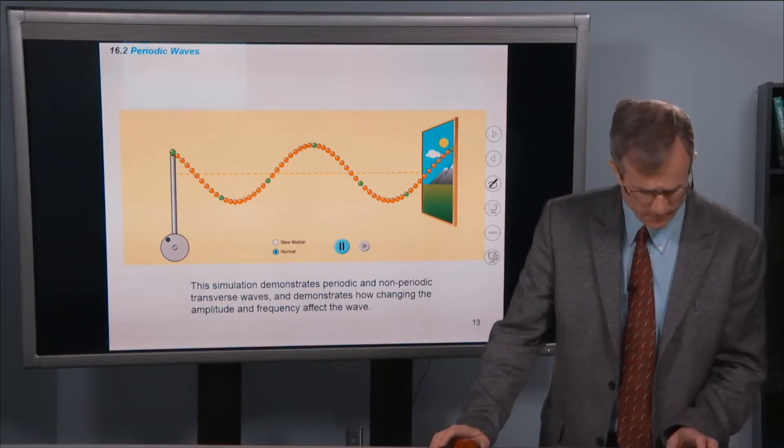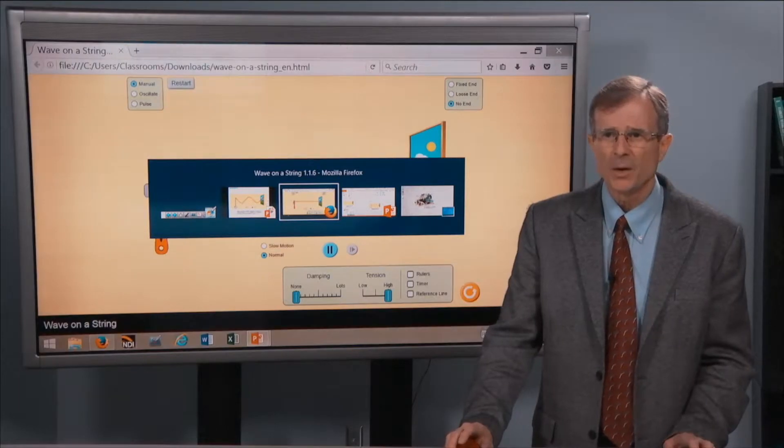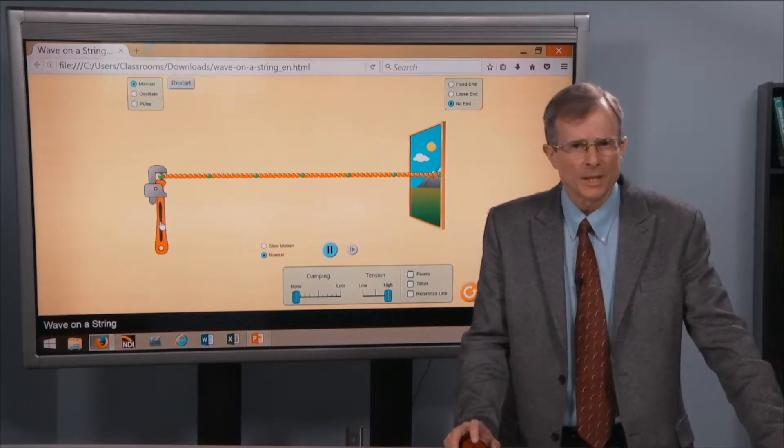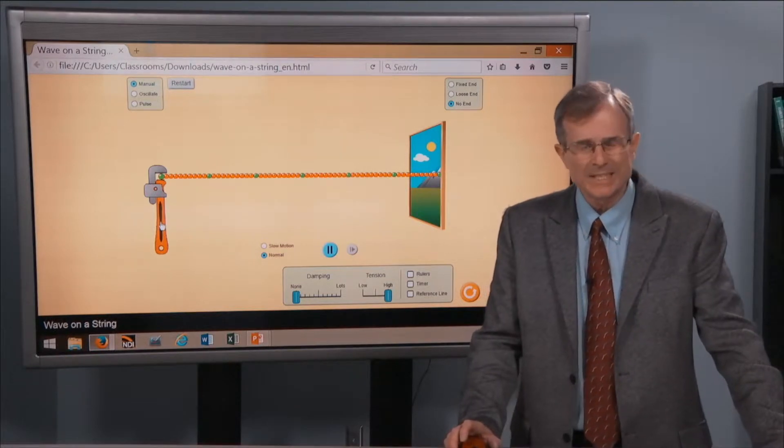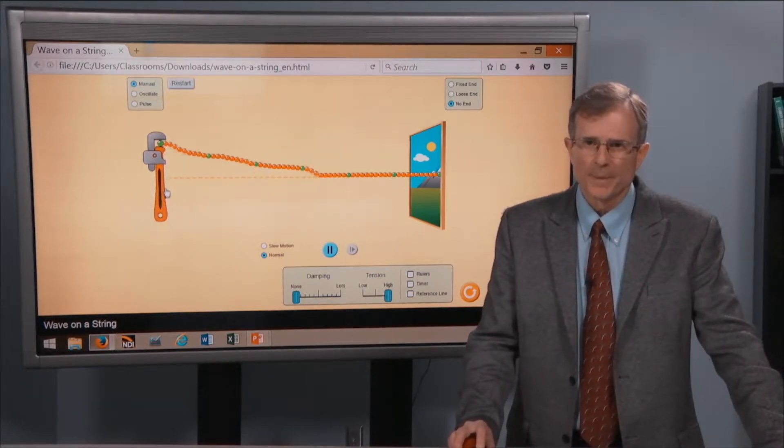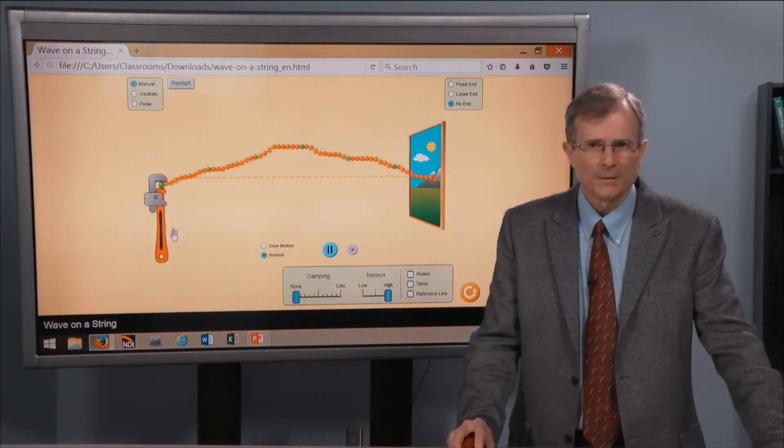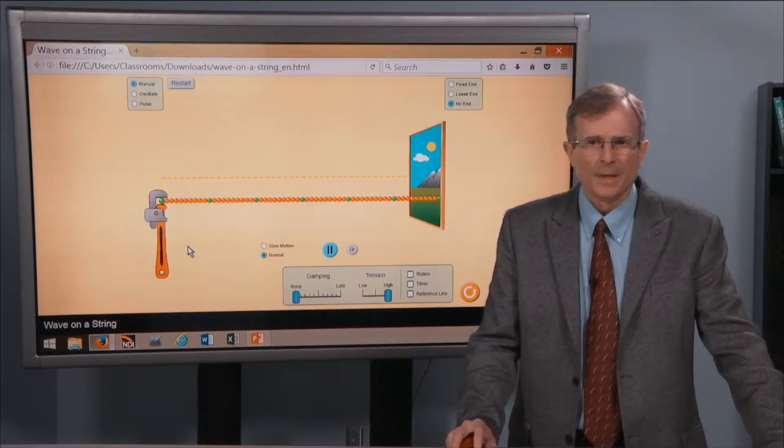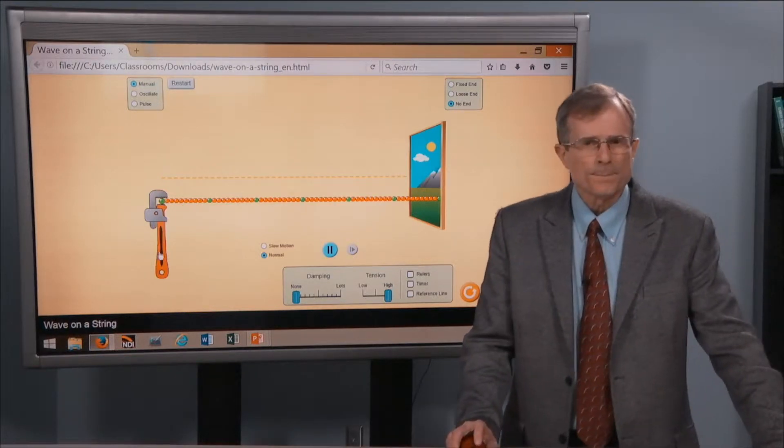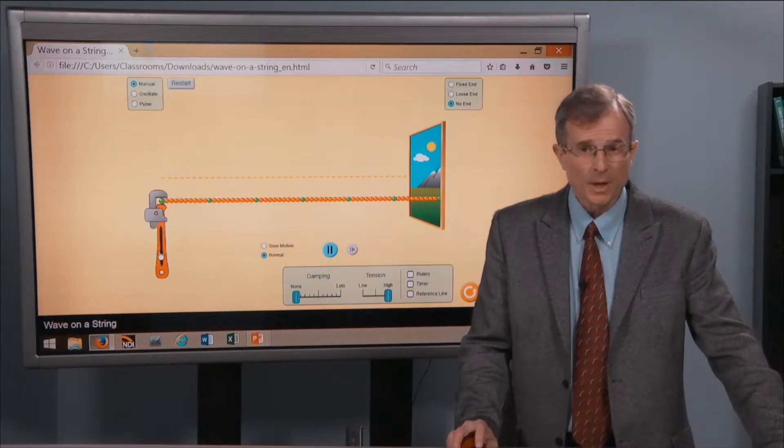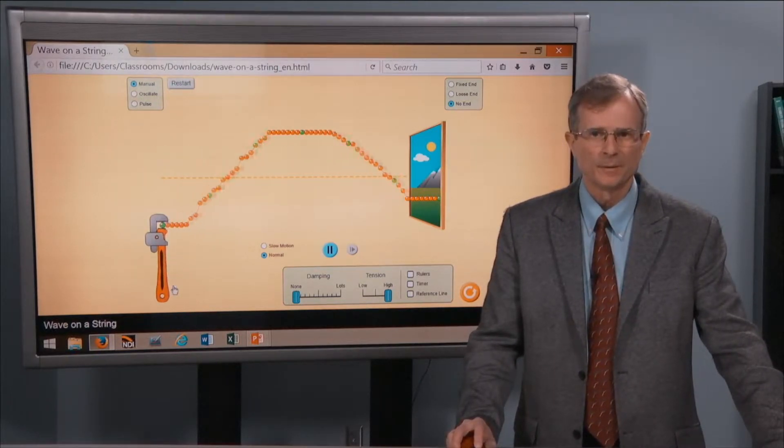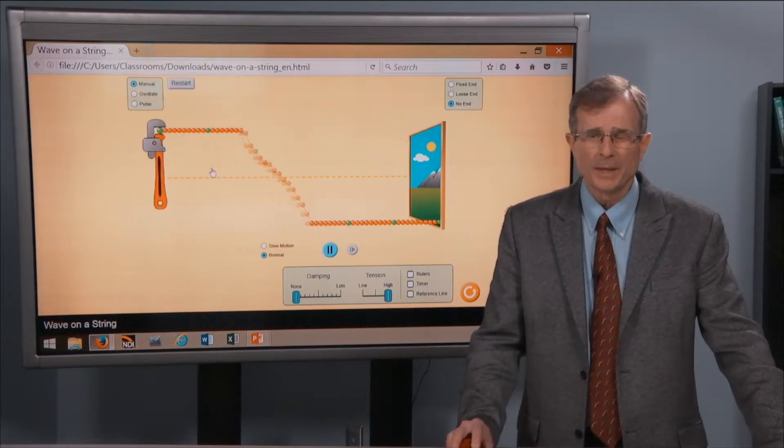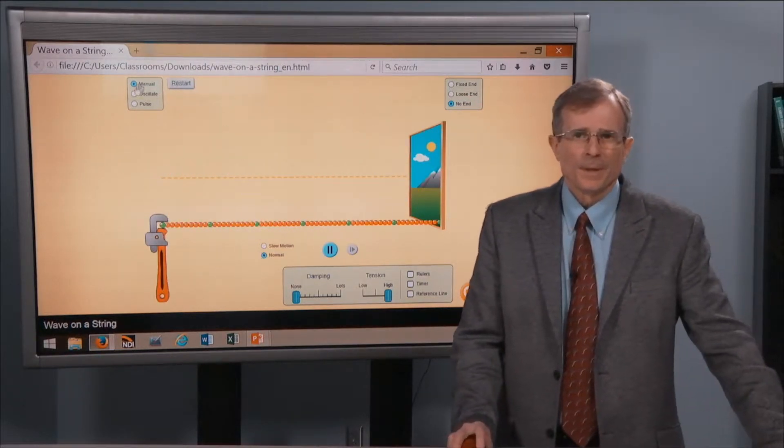So what we're going to do is a simulation to demonstrate how these work. What I have here is a very nice set of simulations from the University of Colorado at Boulder called the PHET, Physics Educational Software. So I'm grabbing the end of a string, or you can think of it as a slinky, and watching how that wave propagates to the right. And I can try and replicate a periodic wave by trying to be as uniform as I can and going up and down.